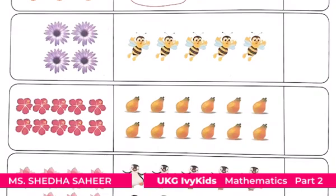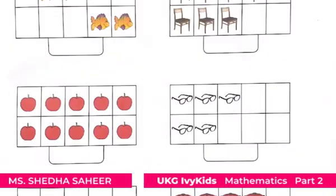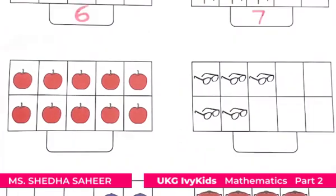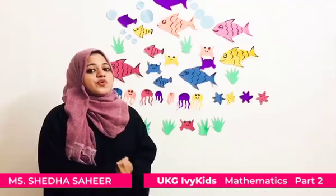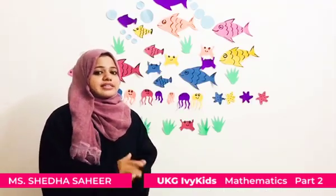You have to count the number of objects in the first box and circle the same number of objects in the second box, and write their numbers correctly. The first one is done as an example. Now, we are going to do another activity.